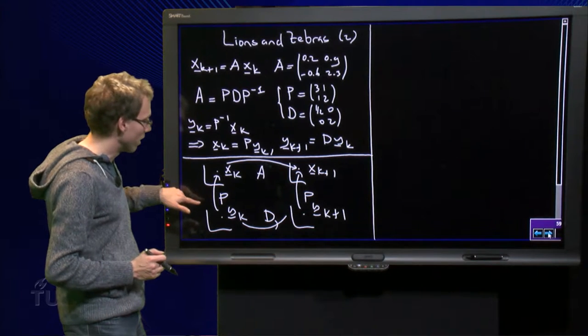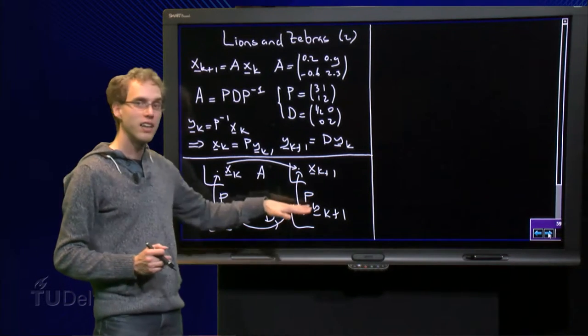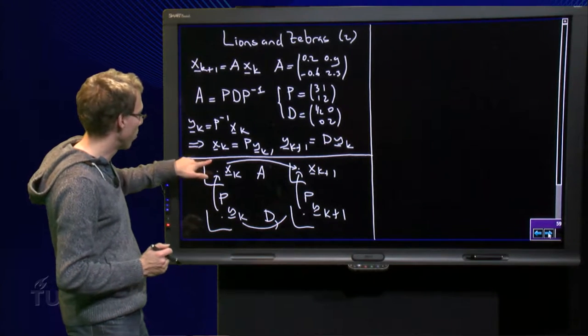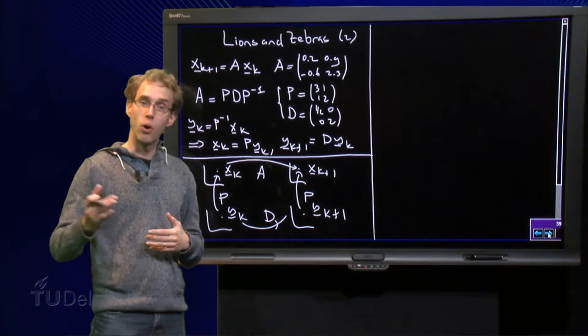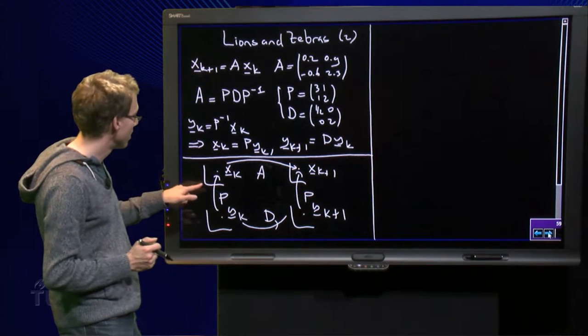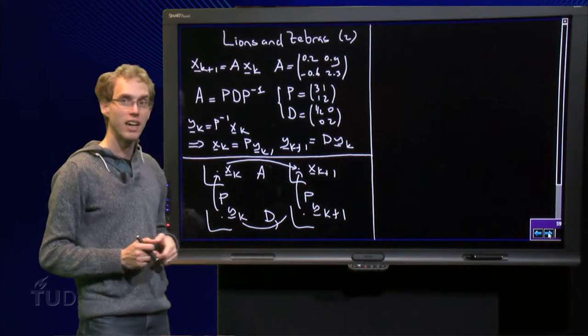So, we first are going to look at the transformation over here, and then the phase space in terms of the y_k, and then we use the fact that we can go up via P in order to draw the phase space for the x_k, because notice we have x_k equals P times y_k.